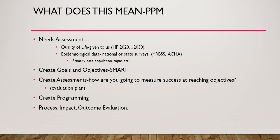What does this mean in relationship to the steps? The first item is the Needs Assessment. The Needs Assessment is based on quality of life, given to us by Healthy People 2020, and soon we will be seeing Healthy People 2030. We are also going to look at epidemiological data from national or state surveys like the Youth Risk Behavior Surveillance Survey and the American College Health Association Survey. We will also collect our own primary data about our population and their interests. After completing our Needs Assessment, we will create goals and objectives, which are typically given to us by state and national organizations.